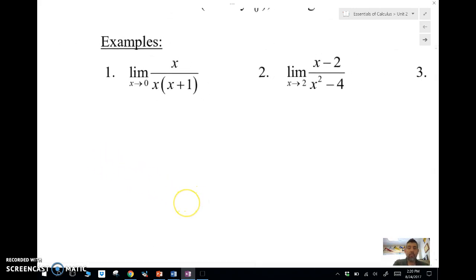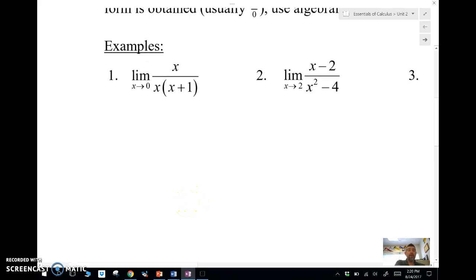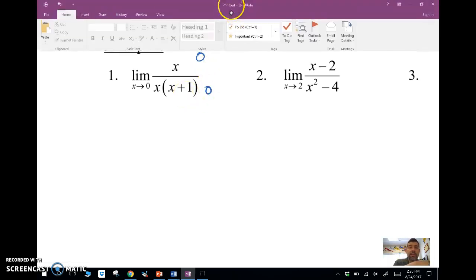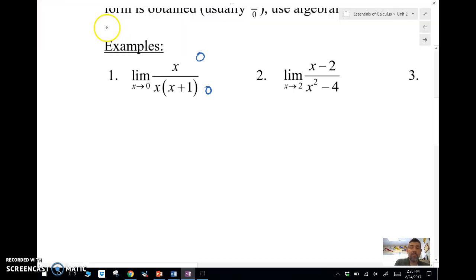Let's start with number one. When we plug in zero, notice I'm going to end up with zero over zero. So anytime I end up with zero over zero, I'm going to need to do some algebra. In this case, I'm going to simplify by dropping out the X's. I need to write the limit as X approaches zero of one over X plus one, and that equals one.